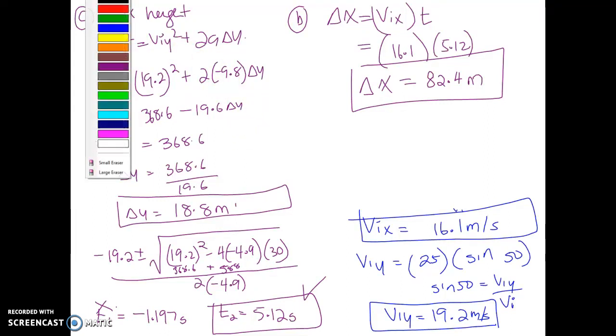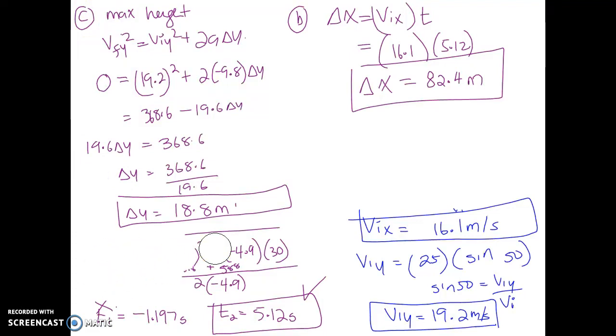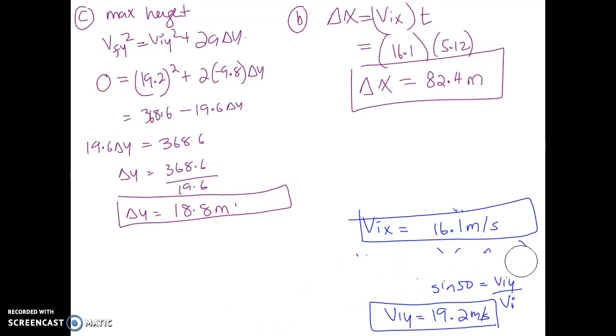The last part of the question asks us with what velocity will this object hit the ground. To figure out my velocity, we said that if my velocity is something like this—this is your vfx, this is your vfy—to figure out my velocity, we know that vix equals to your vfx, so that is going to stay the same: 16.1 meters per second.